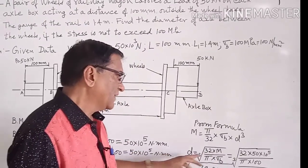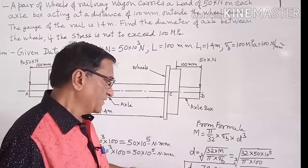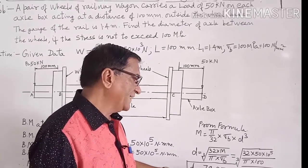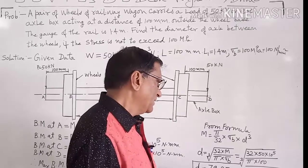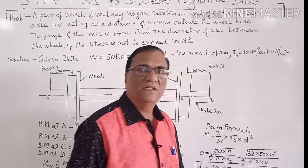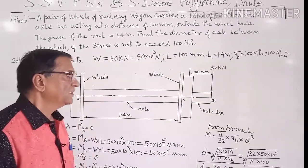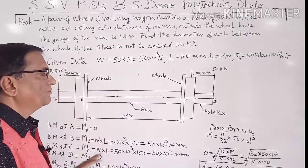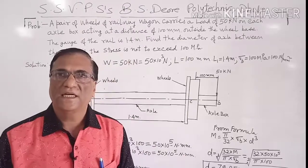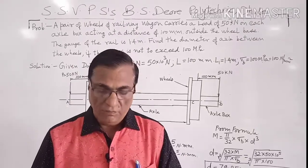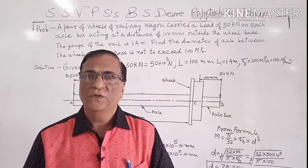By calculator we will calculate the value of diameter. That comes out to be 79.85 millimeter. So we will take the value 80 millimeter. So this is the problem based on the shaft subjected for pure bending. Thank you very much. We will meet in next session.